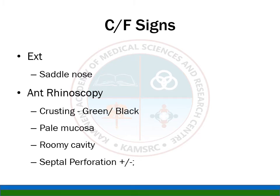On external examination, the patient may show depression due to atrophy of nasal bones and septum, with possible complete loss of the septum giving rise to a saddle nose deformity — though saddle nose is a late presentation. On anterior rhinoscopy, crusting is seen extending from the nasal valve area all the way back to the nasopharynx. The mucosa appears very pale, and the most striking finding is the roomy nasal cavity — this is called empty nose syndrome.